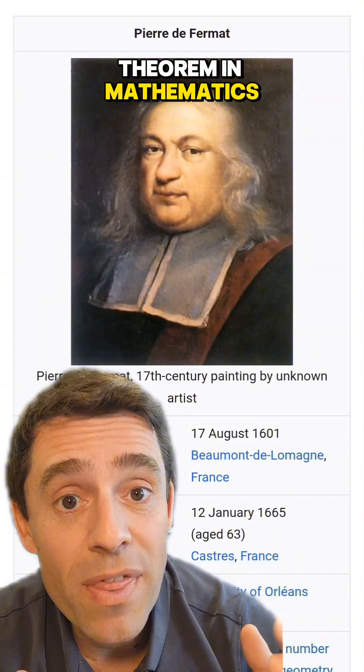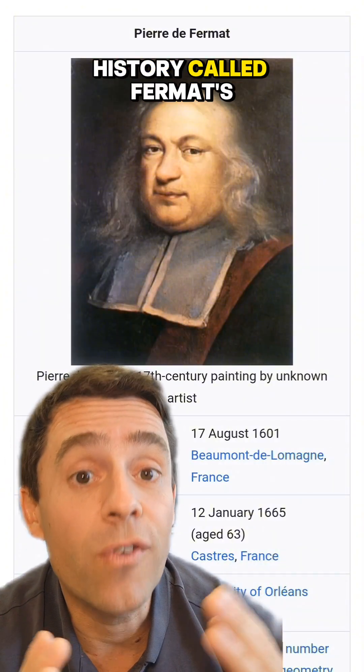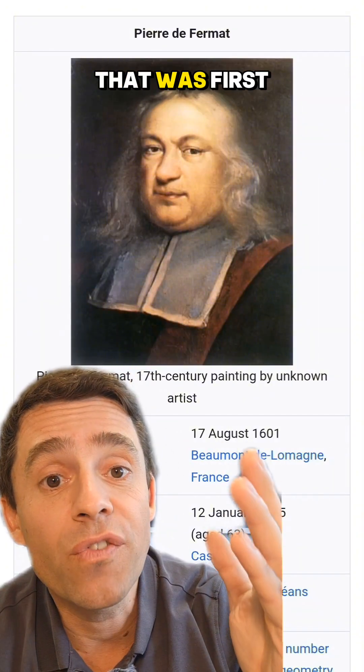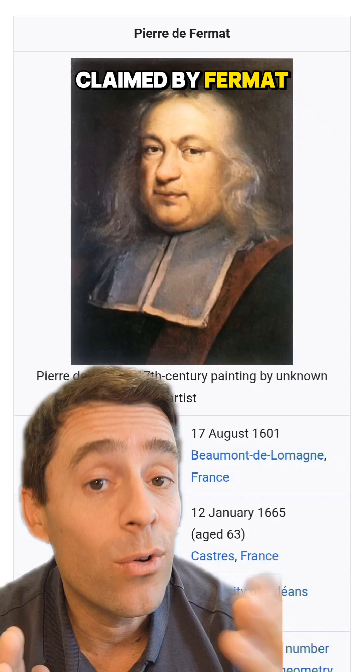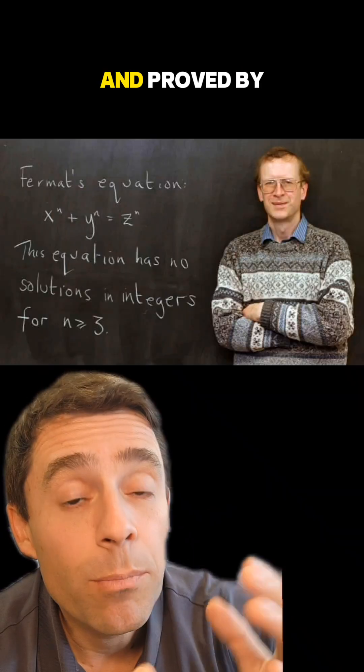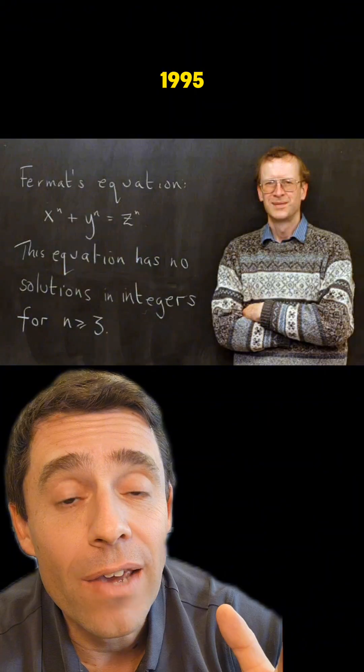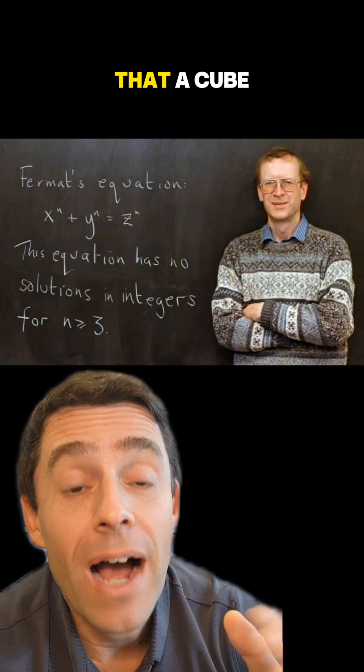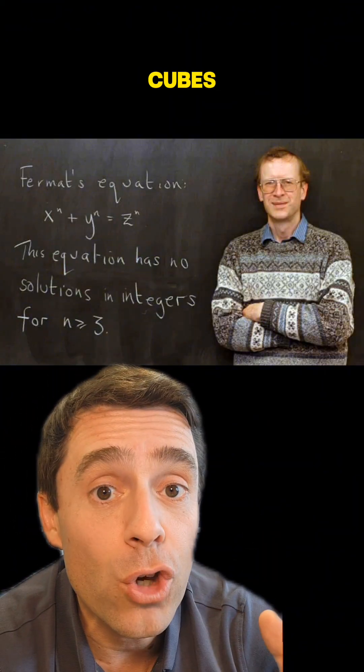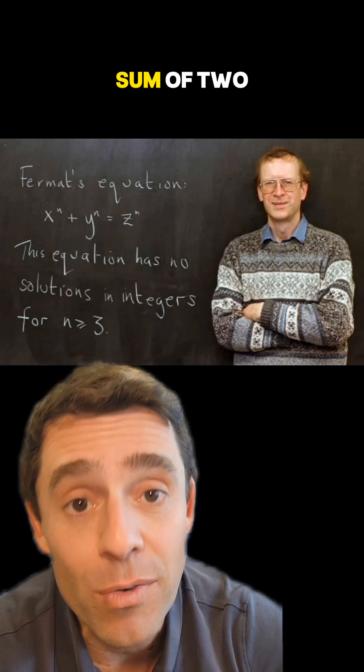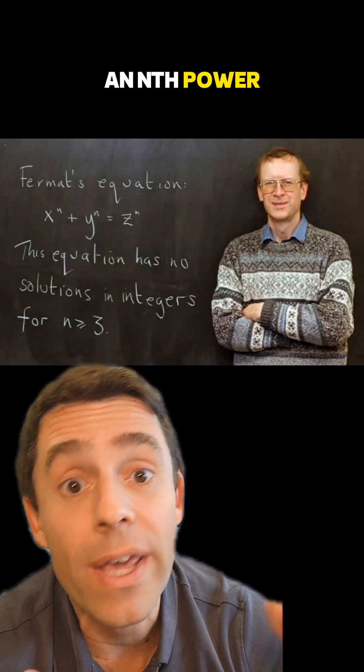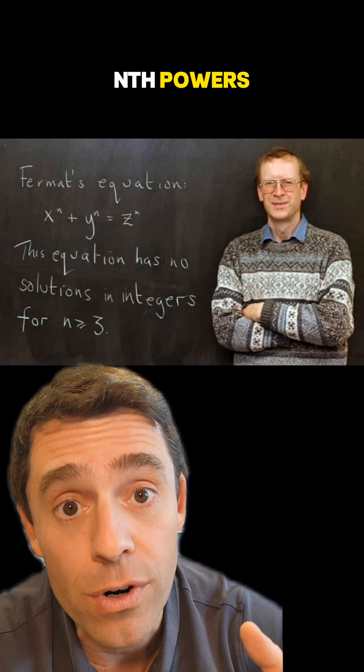That's because there is a theorem in mathematics with a long history called Fermat's last theorem that was first claimed by Fermat around 1637 and proved by Andrew Wiles and Richard Taylor in 1995 that says that a cube cannot be the sum of two cubes, a fourth power cannot be the sum of two fourth powers, and so on. An nth power cannot be the sum of two nth powers.